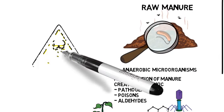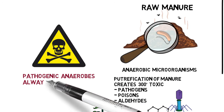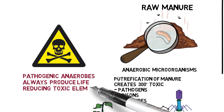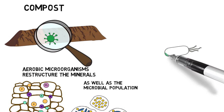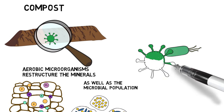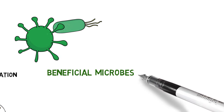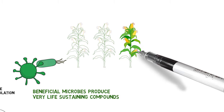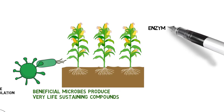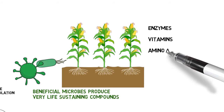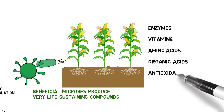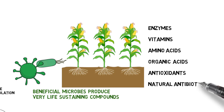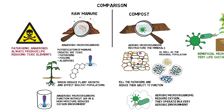Pathogenic anaerobes always, without exception, produce life-reducing toxic elements. Beneficial microbes — aerobic biology — on the other hand, produce very life-sustaining and life-promoting compounds such as enzymes, vitamins, amino acids, organic acids, plant regulators, growth stimulants, antioxidants, and naturally occurring antibiotics. These sustain and promote life, which is completely opposite to the anaerobic pathogens and their production.